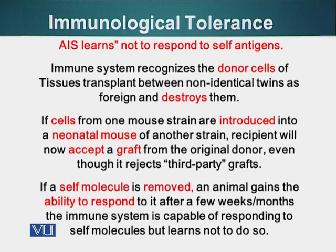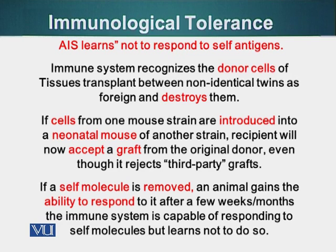Our immune system learns not to respond to our own cells and our own proteins, and that happens very early on during embryogenesis. For example, if foreign cells are taken from a different type of mouse and injected into an embryonic mouse, when that mouse grows up, it will be able to accept grafts or tissue transplants from the donor mouse. This process happens very early on during embryogenesis. Our immune system matures while surveying our body cells and proteins, and those immune cells that react to our own proteins are destroyed.